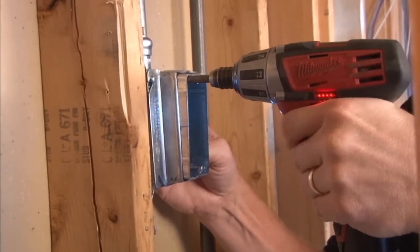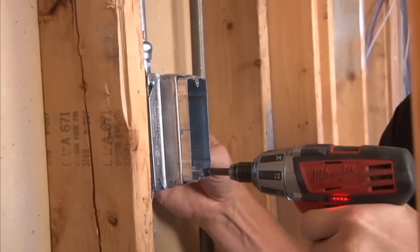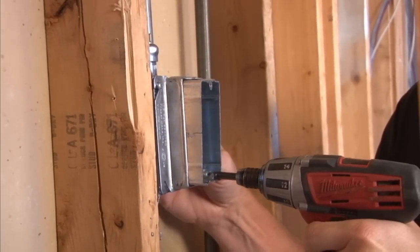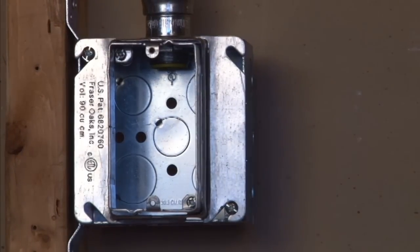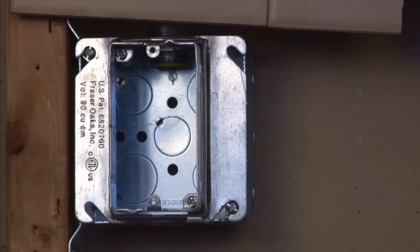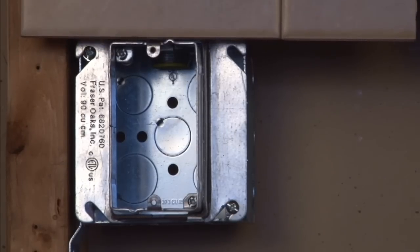As you can see, the ring is moving outward to the perfect finished wall depth and it flushes up nicely with any finished wall from three quarter inches all the way up to inch and a half.